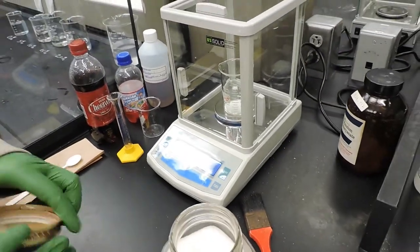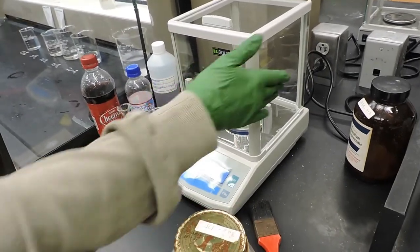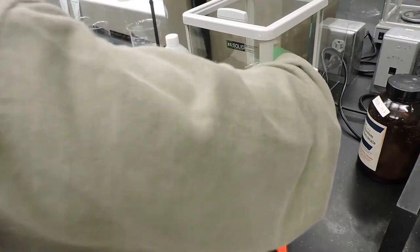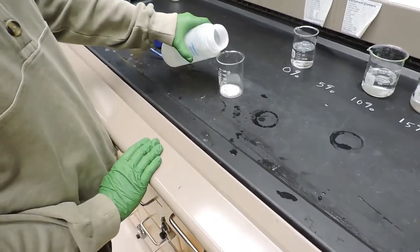Now that we have our 5.056 grams of sugar in the beaker, we will take the beaker and add to it approximately 75 milliliters of DI water.